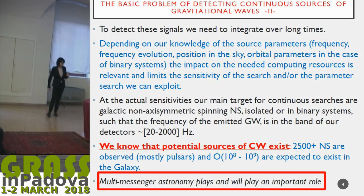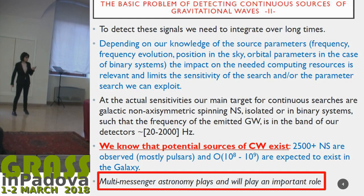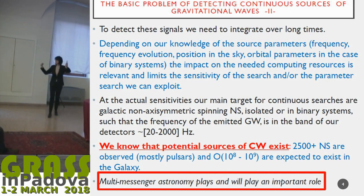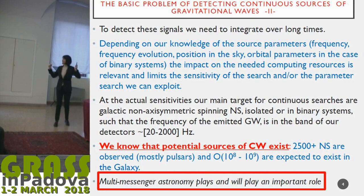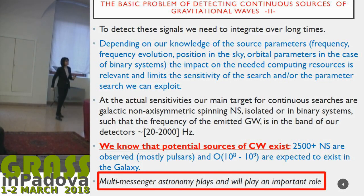It depends on the parameters of the search — on what you need to exploit. We have frequency, frequency resolution, we have the position in the sky, and orbital parameters in case of neutron stars in binary systems. These are far enough from the coalescences that they are orbiting and emit a very weak signal that we have to track.